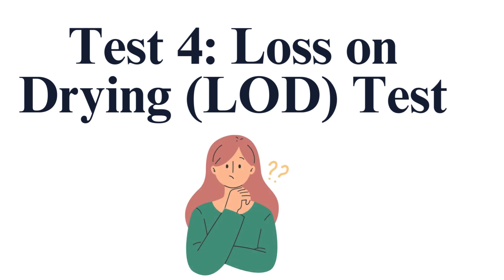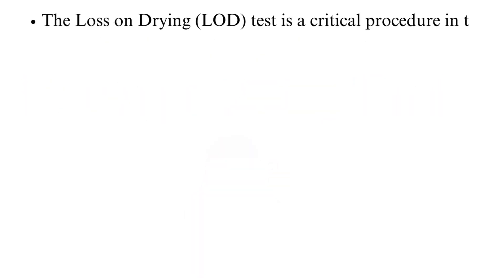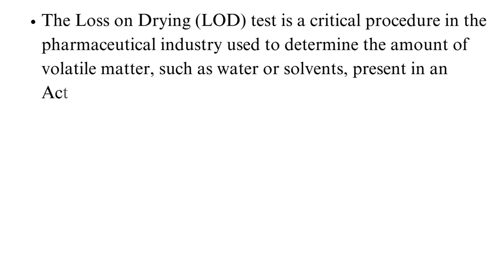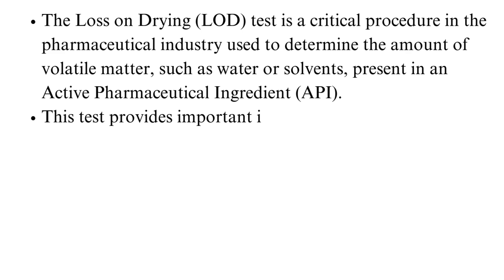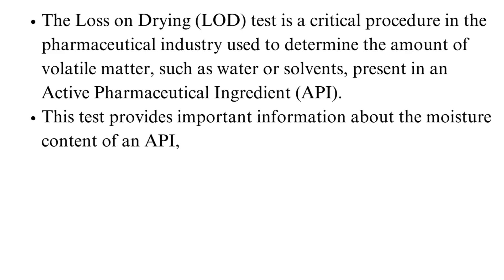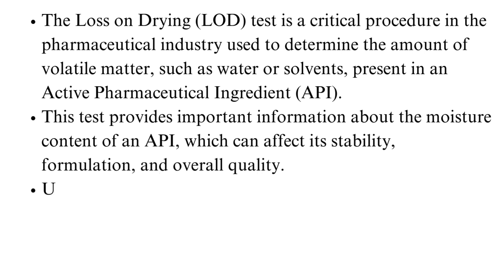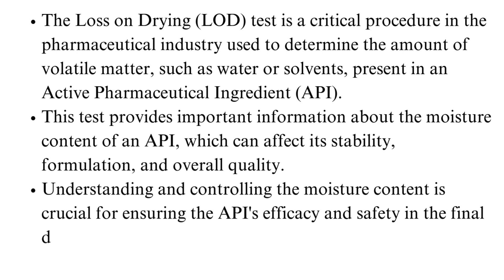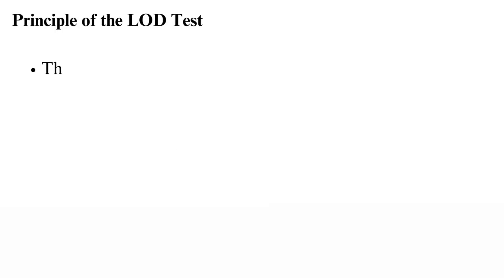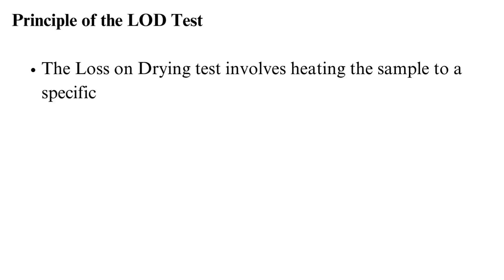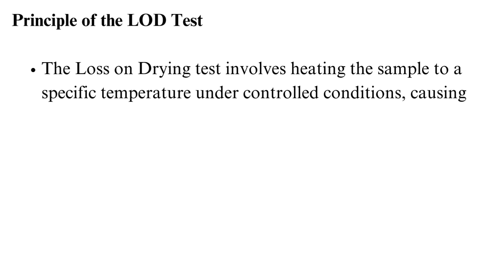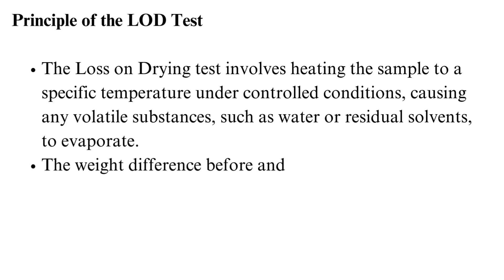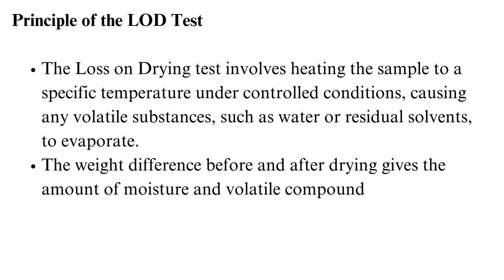Test 4: Loss-on-Drying (LOD) Test. The loss-on-drying test is a critical procedure used to determine the amount of volatile matter, such as water or solvents, present in an API. This test provides important information about the moisture content of an API, which can affect its stability, formulation, and overall quality. Understanding and controlling the moisture content is crucial for ensuring the API's efficacy and safety in the final drug product. The LOD test involves heating the sample to a specific temperature under controlled conditions, causing volatile substances to evaporate. The weight difference before and after drying gives the amount of moisture and volatile compounds lost.